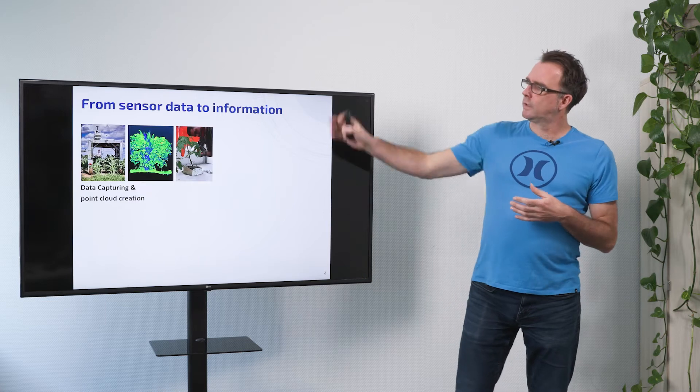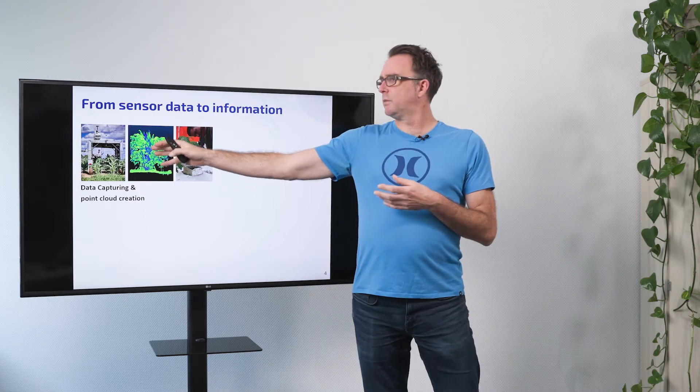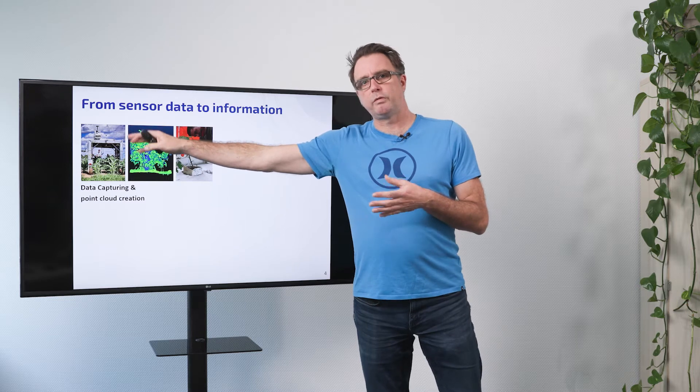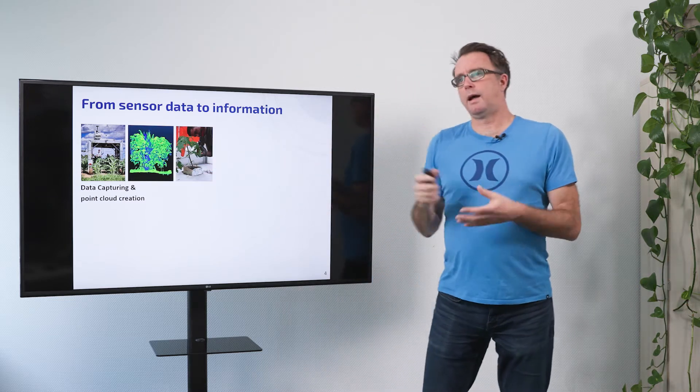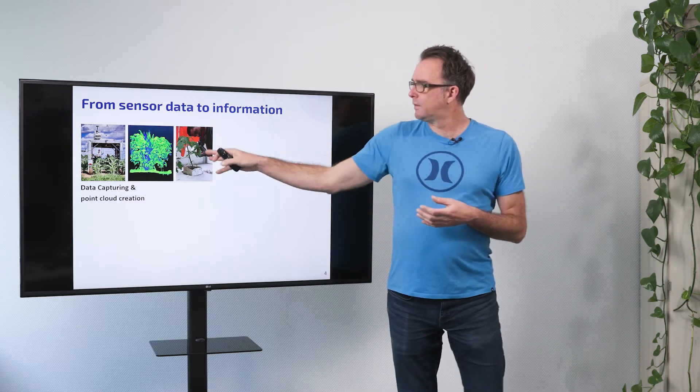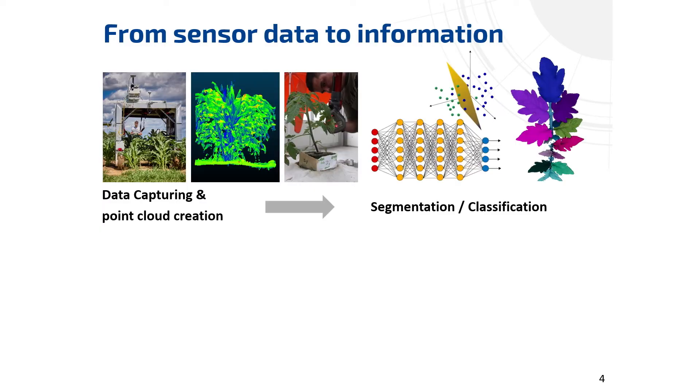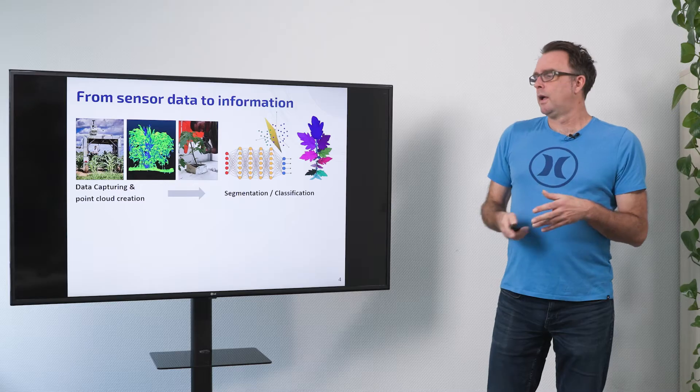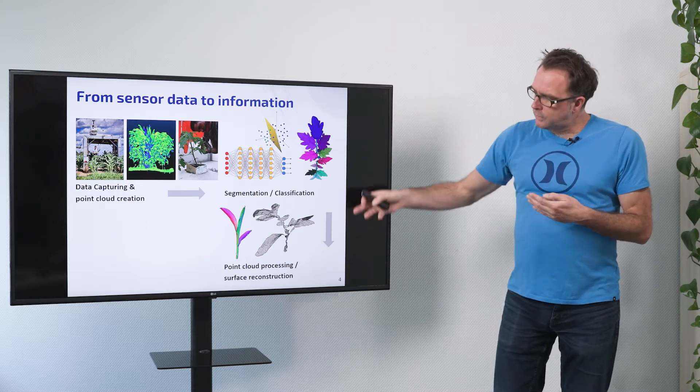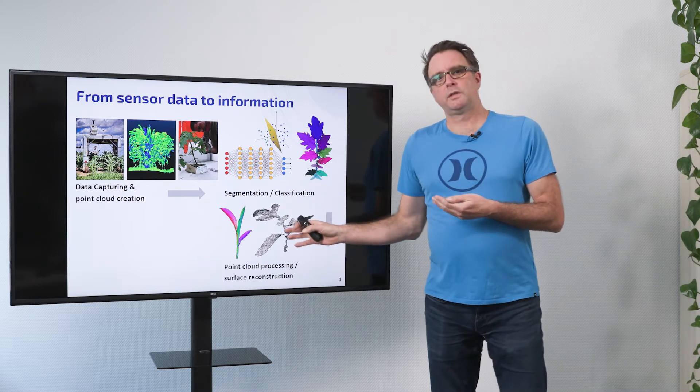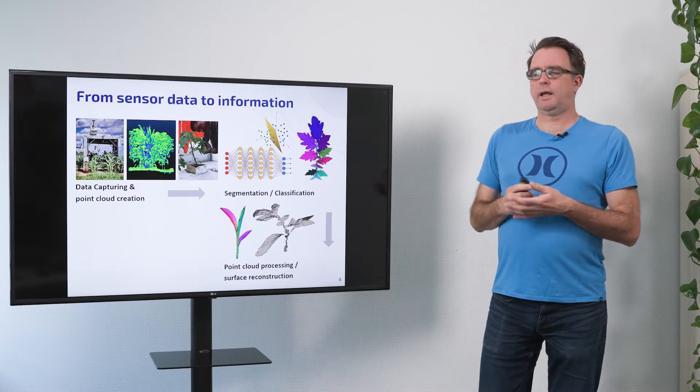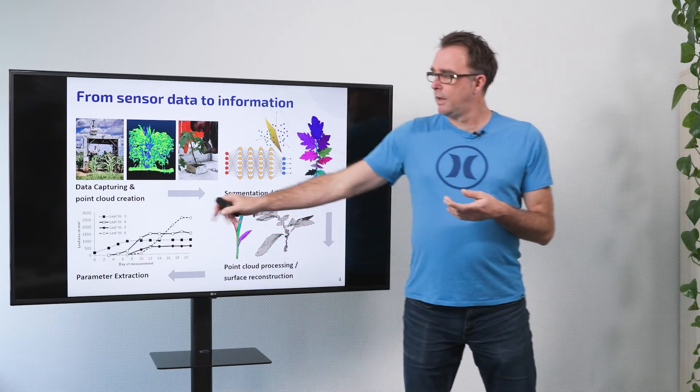How do we get from these measurements to a final information? In this process we first need to capture the data with some devices like in this example here was a robot which drives through the fields and scans the plants with a laser scanner or here it's a lab setup and in the next step usually there is some sort of segmentation or classification where we want to find out where the leaves, where the stem, where the plants and so on. In a further step we need to do some processing like reconstruction of surfaces, calculate the areas, the angles and things like that and in the last step we then can extract the parameters.